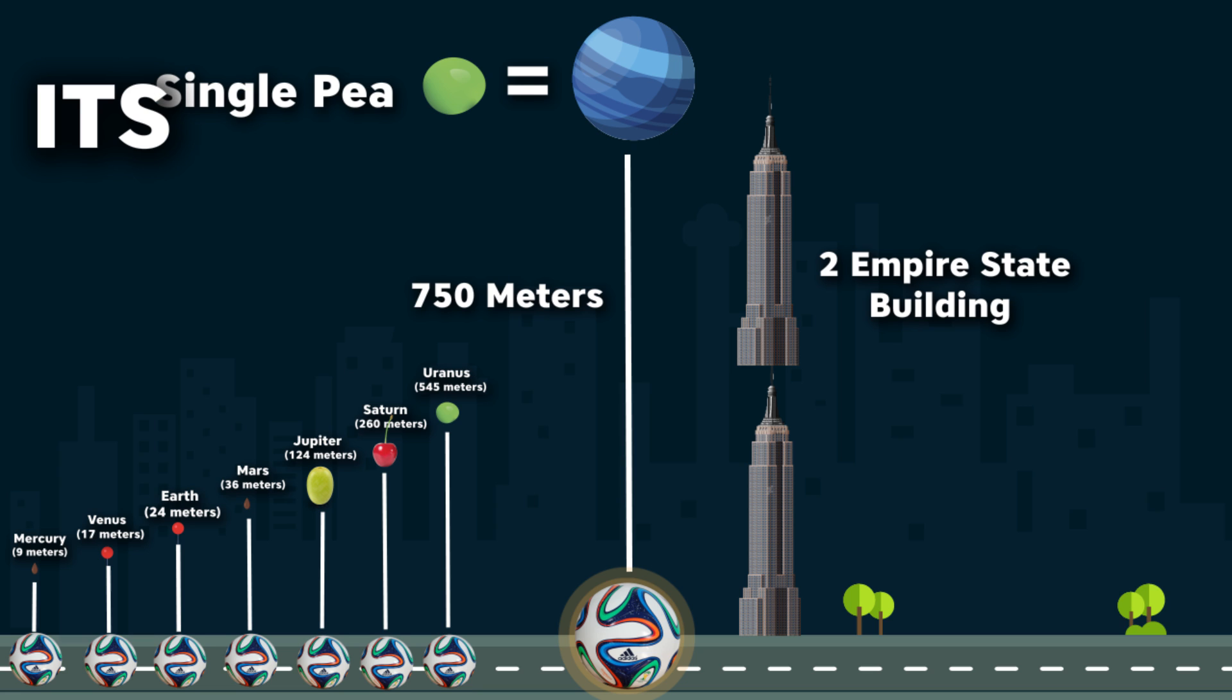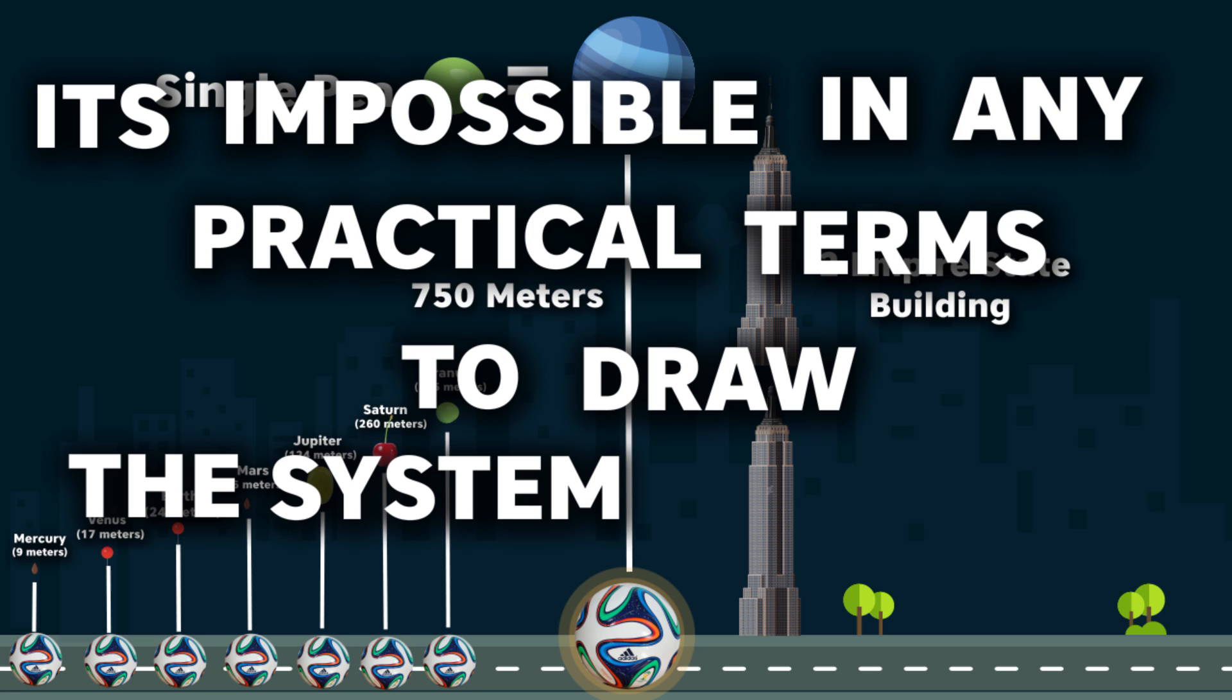Such a distance is, in fact, impossible in any practical terms to draw the solar system to scale.